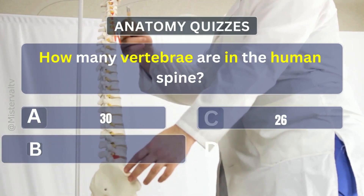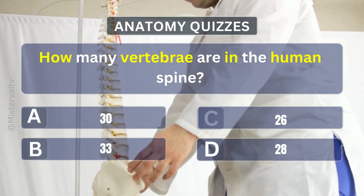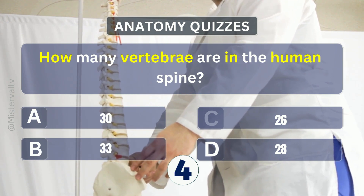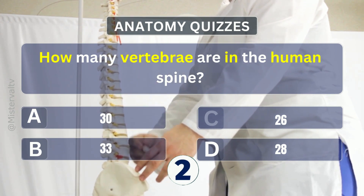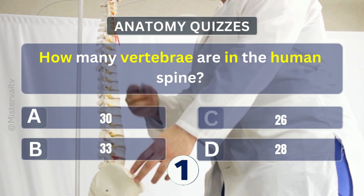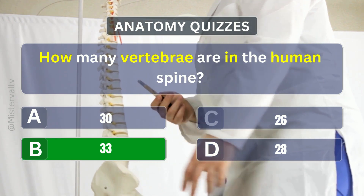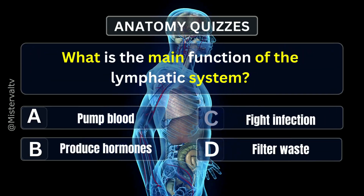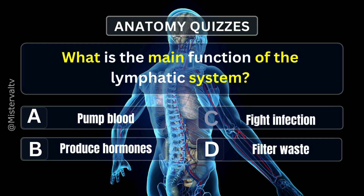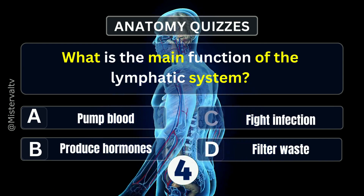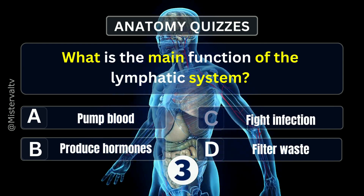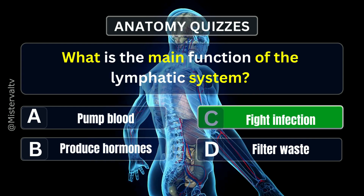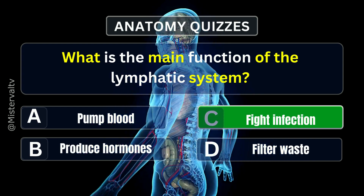How many vertebrae are in the human spine? Answer. B. 33. What is the main function of the lymphatic system? Answer. C. Fight infection.